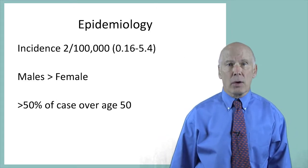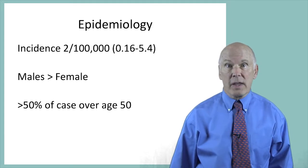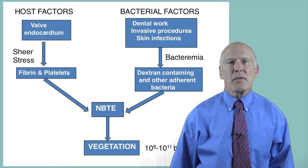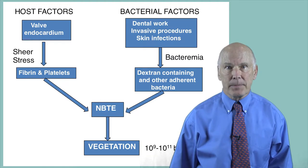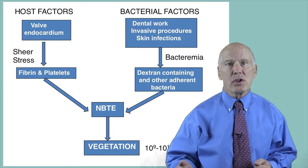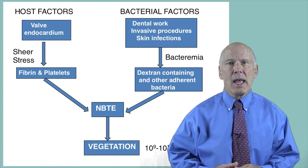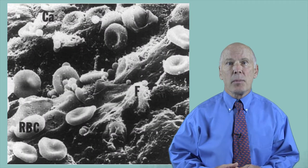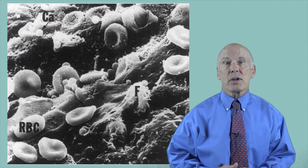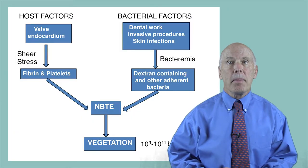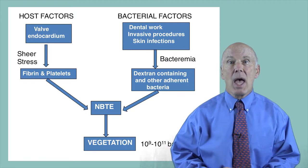How do patients develop endocarditis? As shown in this figure, we need to consider both the host and the bacteria. Most cases of infective endocarditis are preceded by the formation of a predisposing cardiac lesion. When the endocardium of our heart valves is subjected to excessive and prolonged shear stress, the valve can become damaged. This endocardial damage results in the accumulation of platelets and fibrin, producing what Drs. Paul Beeson and David Durack have called non-bacterial thrombotic endocarditis, or NBTE.